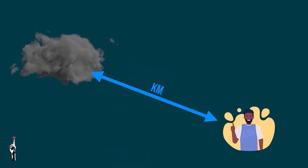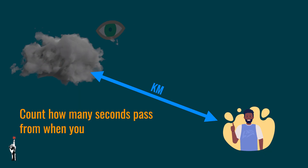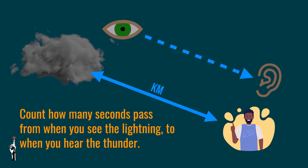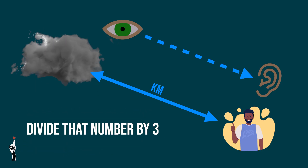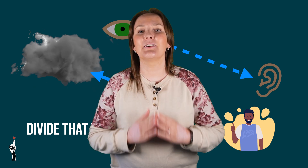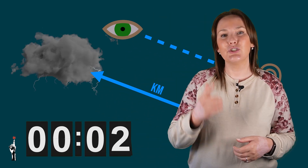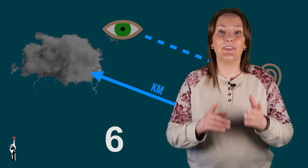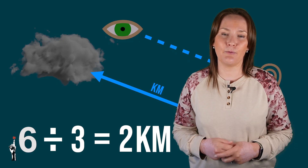For interest's sake, do you know how to work out how far lightning is? To guess how far away lightning is, count how many seconds pass from when you see the lightning to when you hear the thunder, then divide that number by three to get the distance in kilometers. For example, if you count six seconds, the lightning is about two kilometers away.